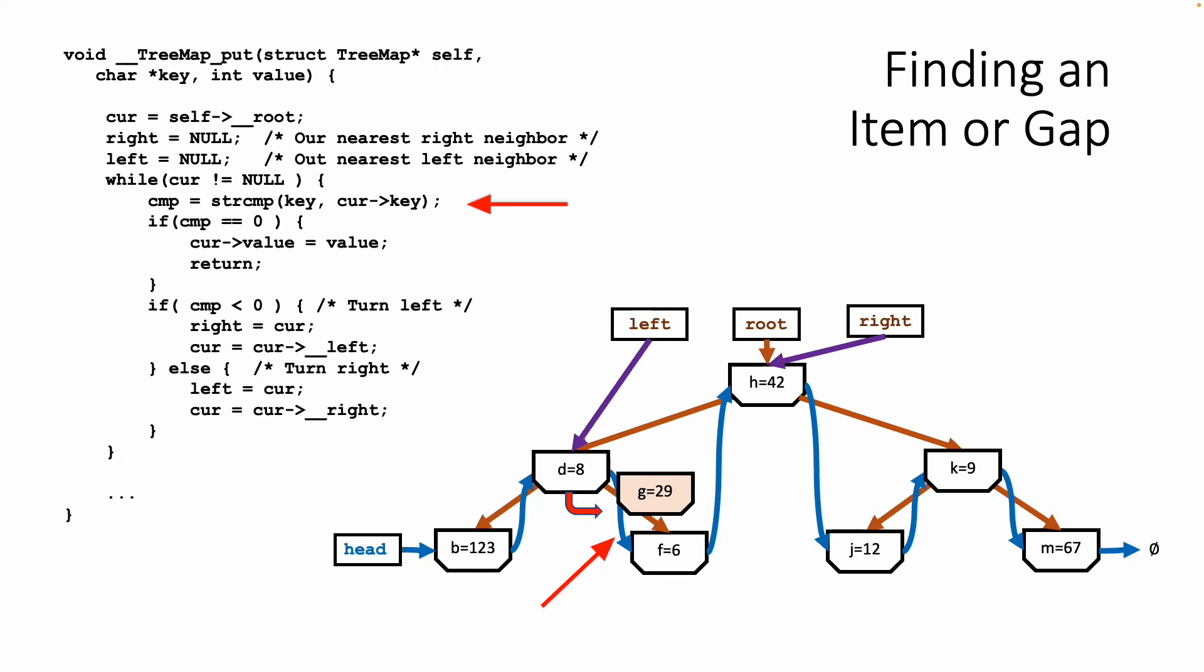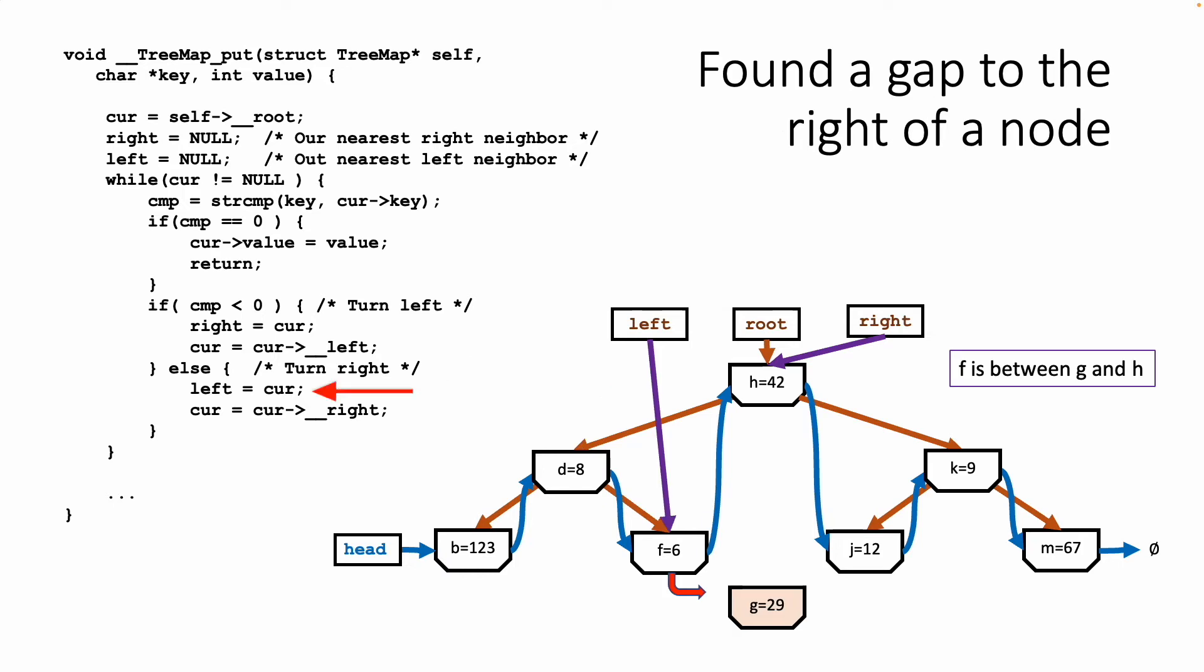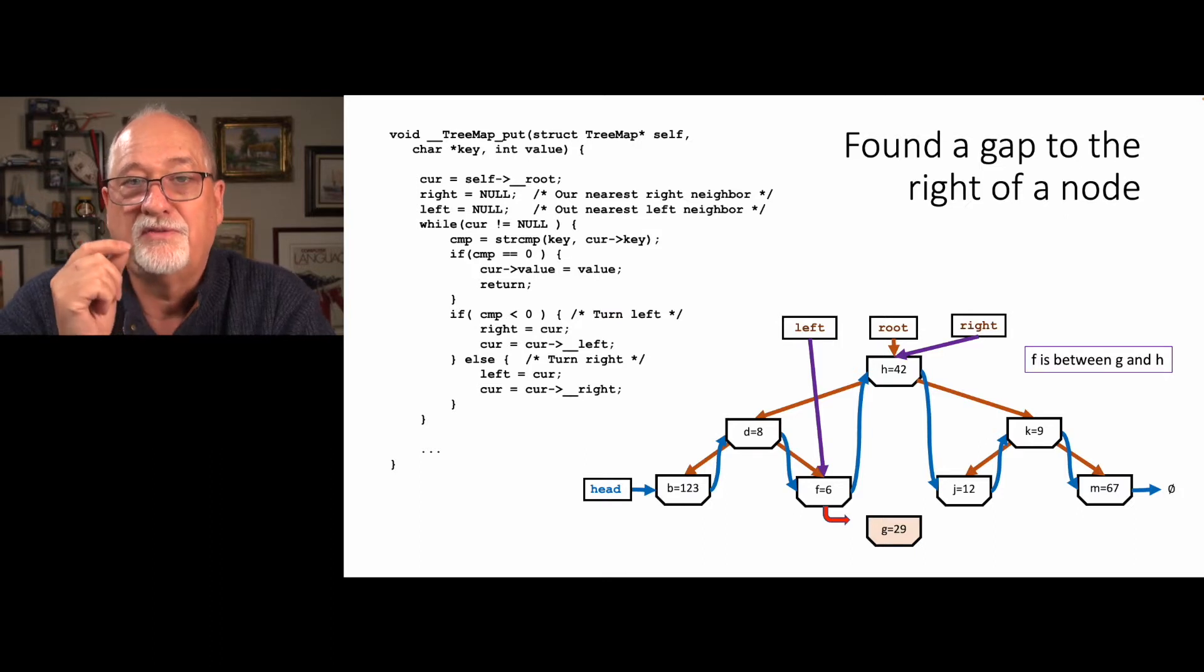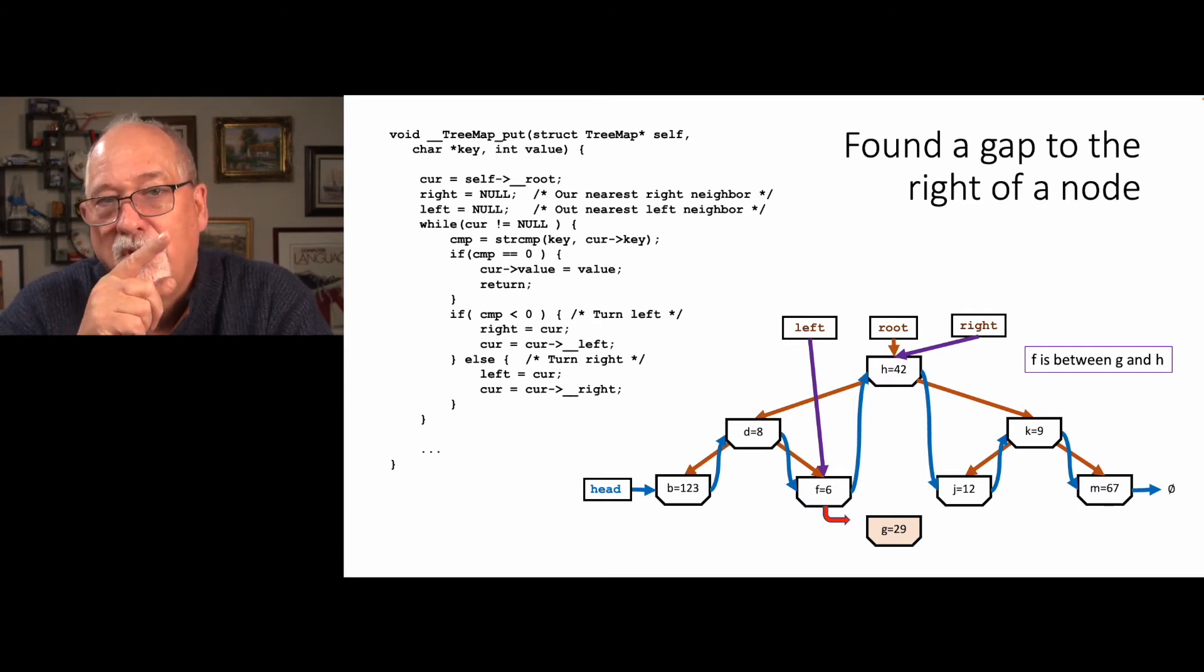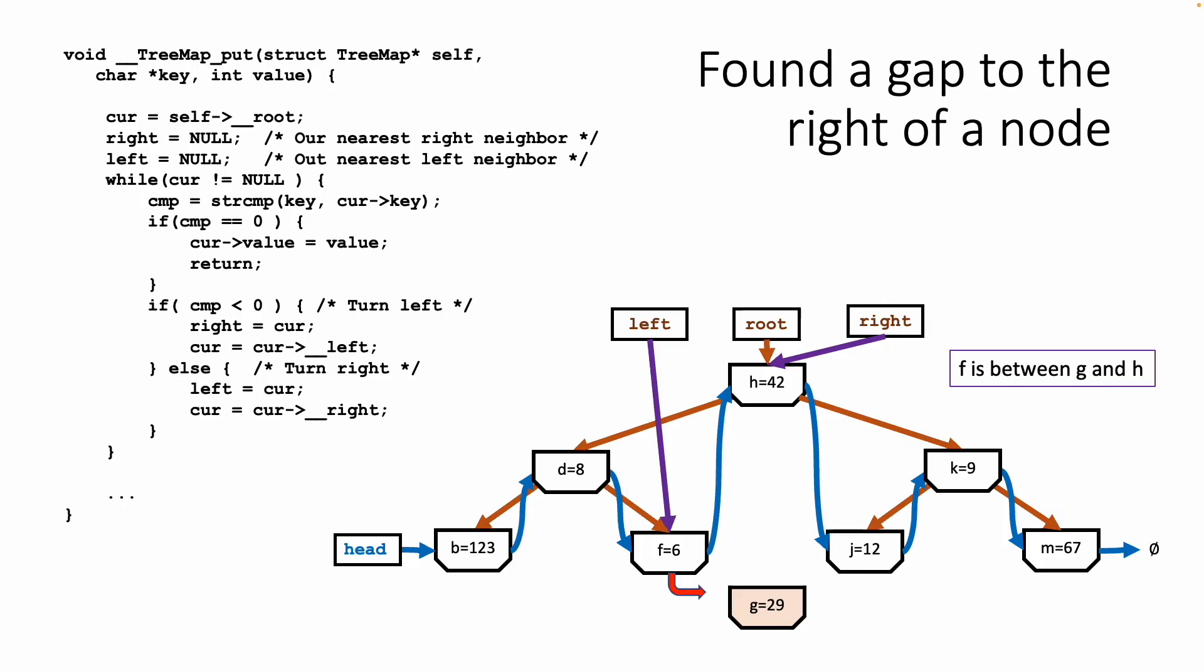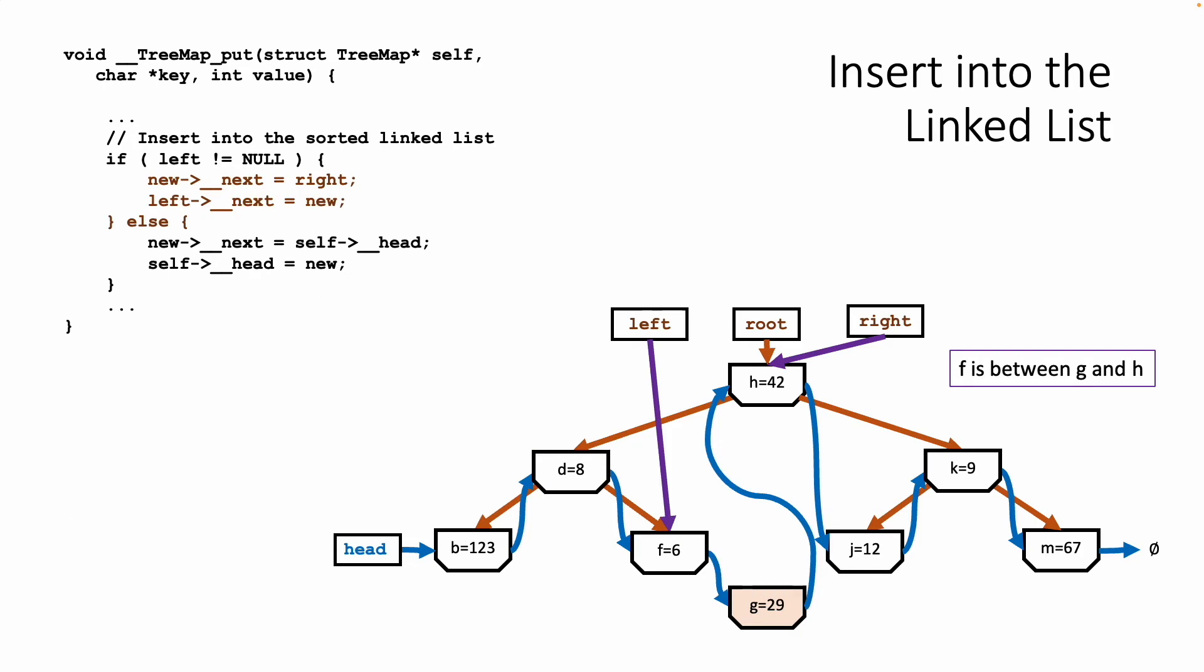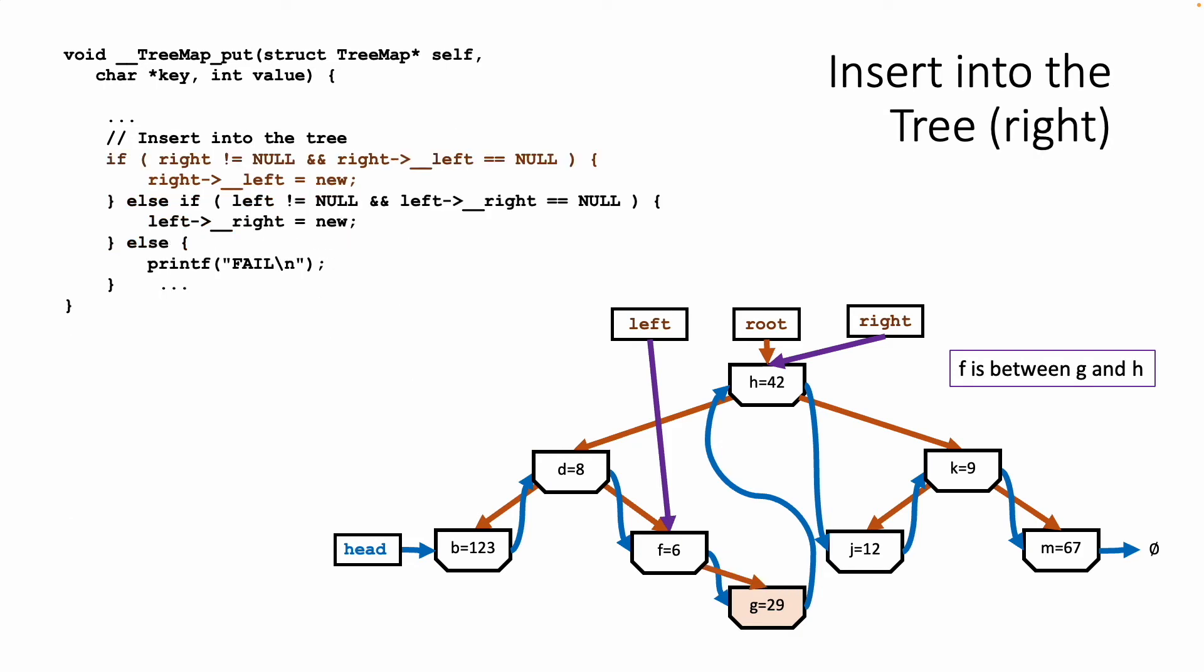Then we compare g to f, and g is greater than f. So we're going to take a right turn. Whenever we take a right turn, we update left. So now we have actually found the place that g belongs. And if you look, left and right are perfect for the linked list, because now we know that left next is going to point to g, and g next is going to point to h. So left next won't point at h anymore, it's going to point at g. And g new next is going to point at h. So when we do this, because we've got left and we've got right, we just link them in. Then we insert it into the tree, and away we go.